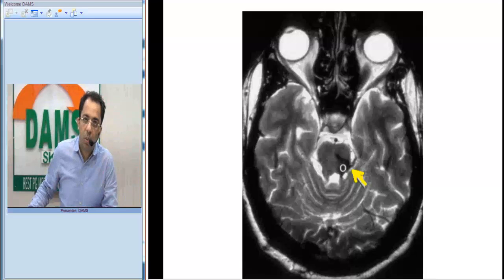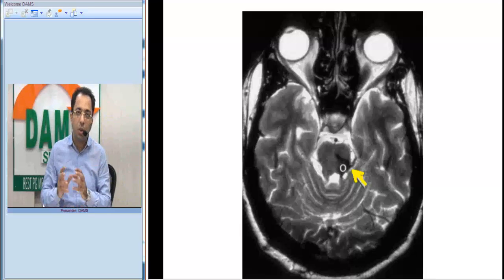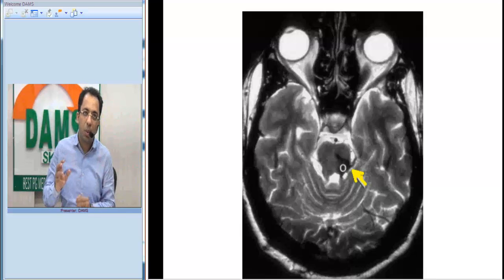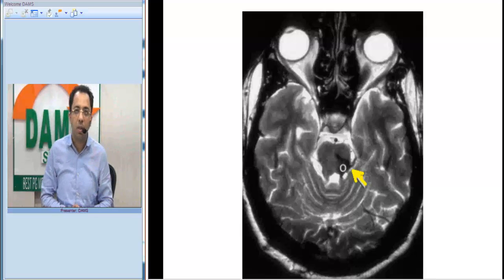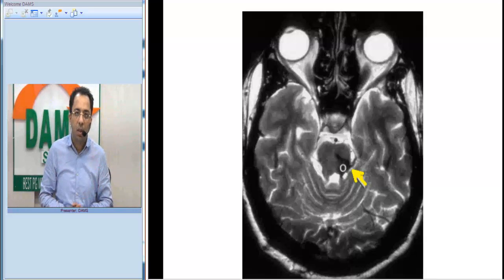On this T2 weighted image you can see a hypointense area in the dorsal part of the pons on the left side. On the dorsal pons you have a hypointense area. This could indicate hemosiderin staining in this area, or old blood products.